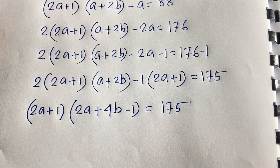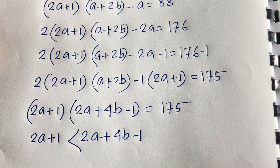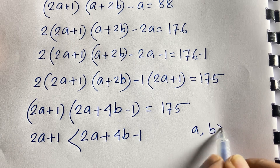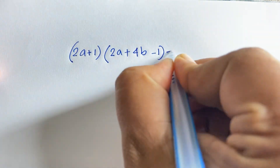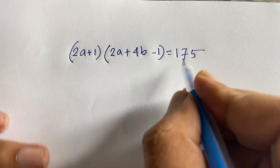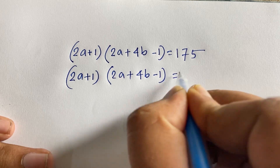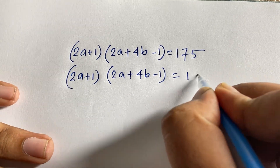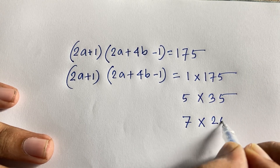Now in this expression, (2a plus 1) times (2a plus 4b minus 1) equals 175, where a and b are positive integers. We find the factors of 175: it will be 1 times 175, or 5 times 35, or 7 times 25. So we have three cases.